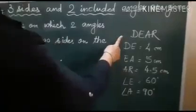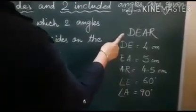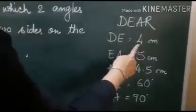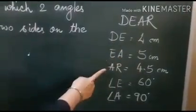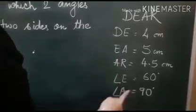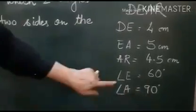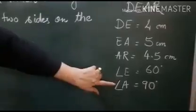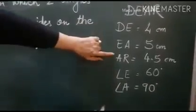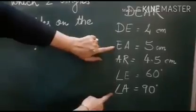We have to draw a quadrilateral DEAR. Here the sides are given: DE 4 cm, EA 5 cm, AR 4.5 cm, angle E 60 degree, angle A 90 degree. So we have 2 angles E and A. Which side should we choose out of these 3 where we can draw angle E as well as angle A?